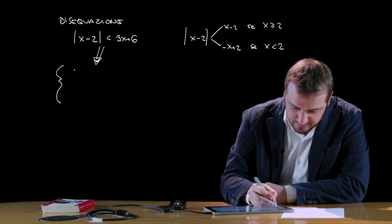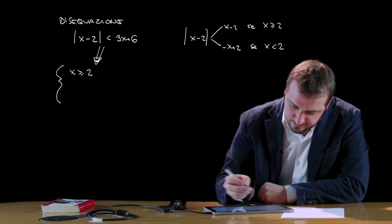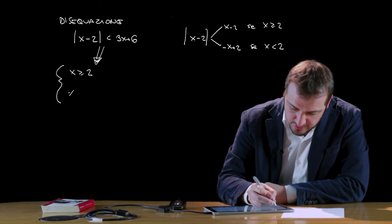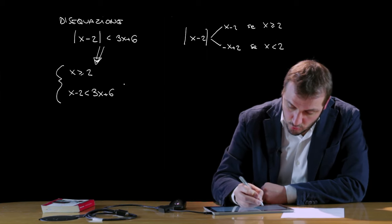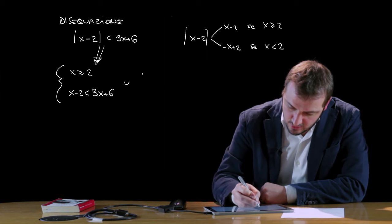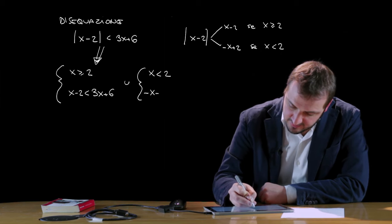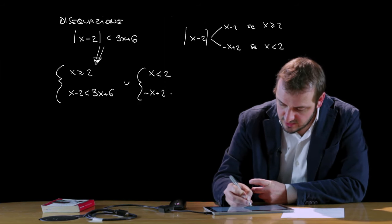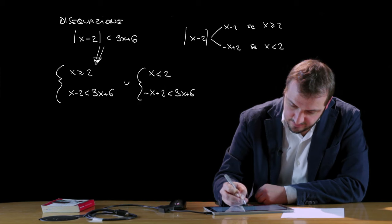Un primo sistema da studiare quando x è maggiore o uguale di 2, che corrisponde a x-2 < 3x+6. Unito a un altro sistema da analizzare invece quando x è minore di 2, dove dovremmo andare a vedere quando è che -x+2, modulo cambiato di segno, è minore di 3x+6.